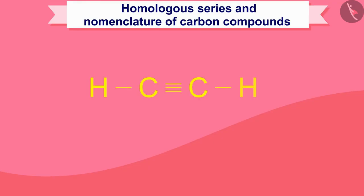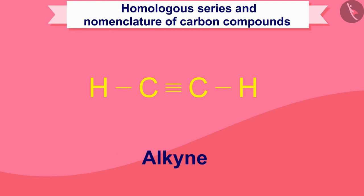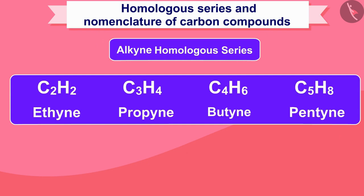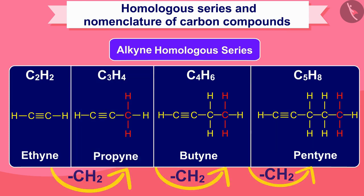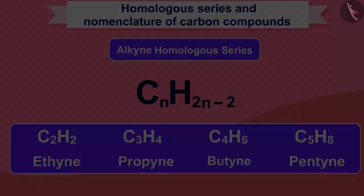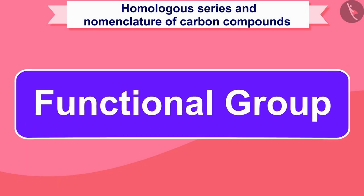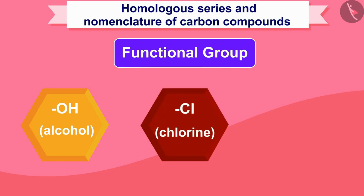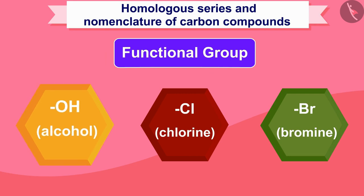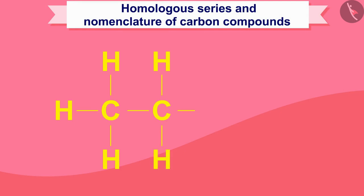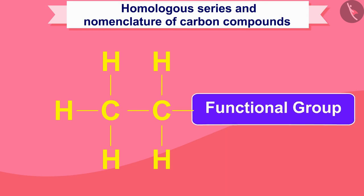Similarly, if the hydrocarbon compound contains a carbon-carbon triple bond, the series will be called alkyne — the name will end with 'yne.' There will also be a difference of CH₂ unit moving from one member to another, and any compound in this series can be represented by the formula CₙH₂ₙ₋₂. Let us now understand what a functional group is — such as OH (alcohol), Cl (chlorine), Br (bromine), etc. This functional group gives compounds special characteristics.